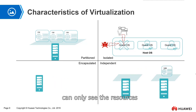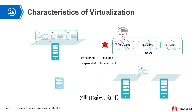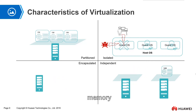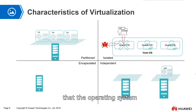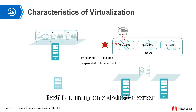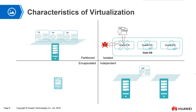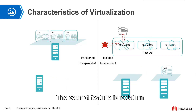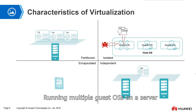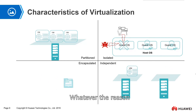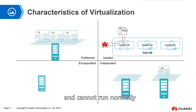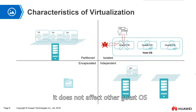Moreover, each operating system can only see the resources and devices that its own virtualization layer has allocated to it — such as CPU, memory, network card, hard disk, and so on — making it seem as though the operating system is running on a dedicated server. The second feature is isolation. When running multiple guest OS on a server, if one guest OS is attacked by a hacker or becomes infected, whatever the reason it fails and cannot run normally, it does not affect the other guest OS, which continue running and operating normally.